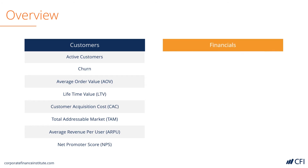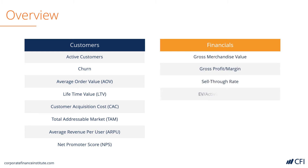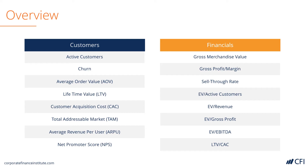On the financial side, there are again quite a few to go through. Gross merchandise value is very important and referenced in some types of e-commerce businesses but not others. Gross profit or gross margin in dollars and percentages, the sell-through rate, enterprise value per customer, enterprise value relative to revenue, enterprise value relative to gross profit, EV to EBITDA, and finally — probably one of the most important metrics — lifetime value divided by customer acquisition cost.